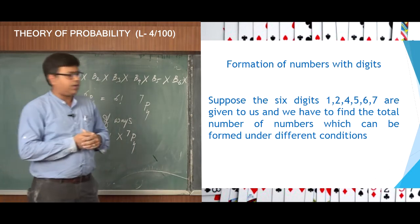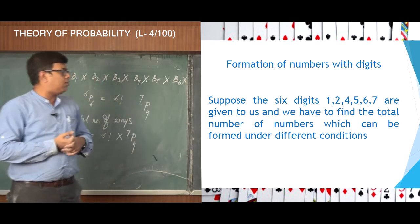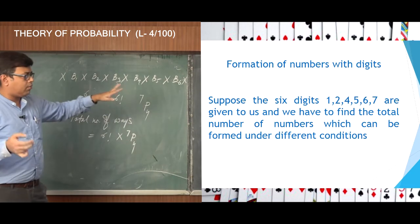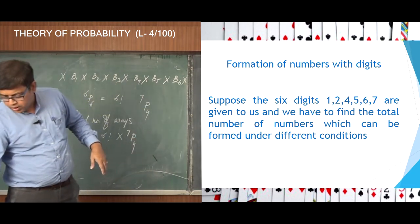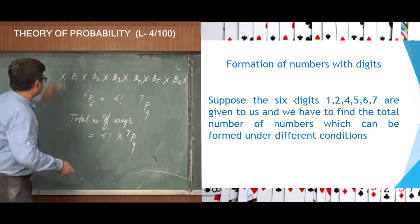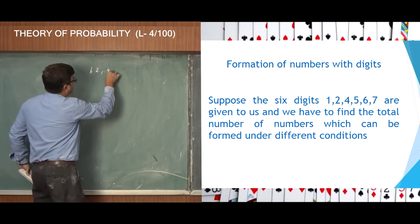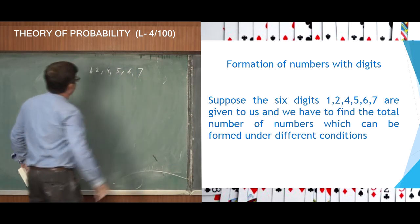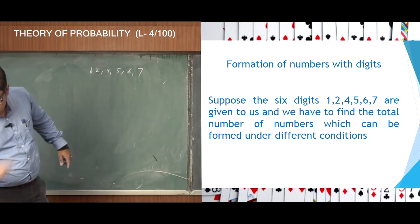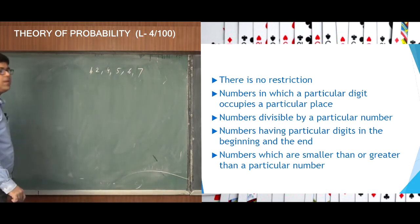I have considered six digits: 1, 2, 4, 5, 6, and 7, and we have to find the total number of numbers which can be formed under different conditions. The conditions will vary, so it is a restricted permutation, not unrestricted. Let me write the digits first: 1, 2, 4, 5, 6, 7 — these are the six digits given to us, and with these six digits I have to form numbers under certain conditions.